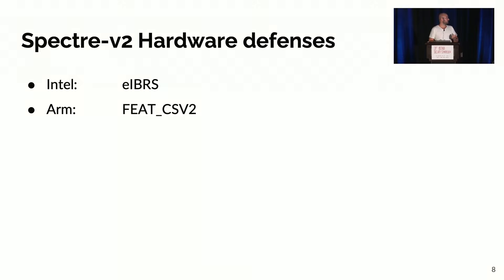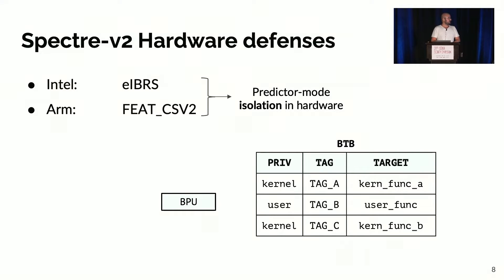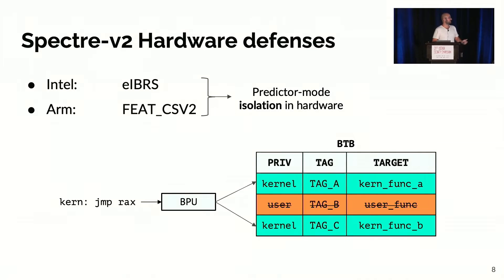The reason why this is interesting is that the BPU doesn't understand privilege context, so you can mount attacks between different applications, between user and kernel, and even between guest and host. Because of this, most major vendors worked to deploy defenses. In the case of Intel and ARM, they released IBRS and CSV2, and the idea is to enforce predictor mode isolation in hardware — essentially extending the BTB with an extra column tracking the privilege level of the application.